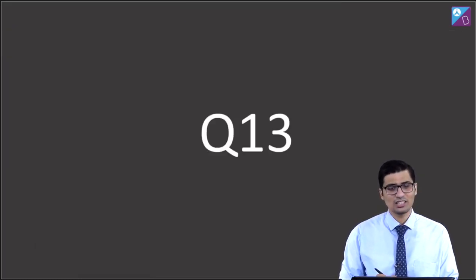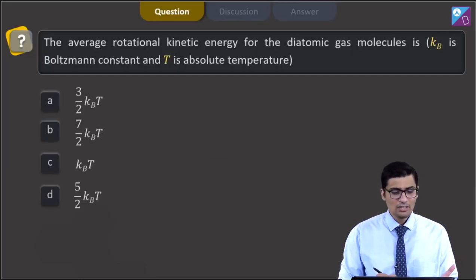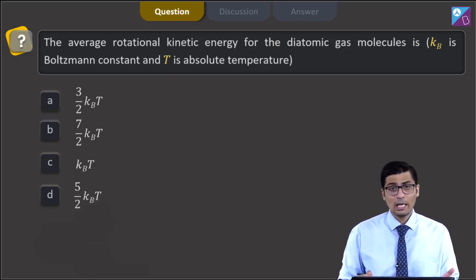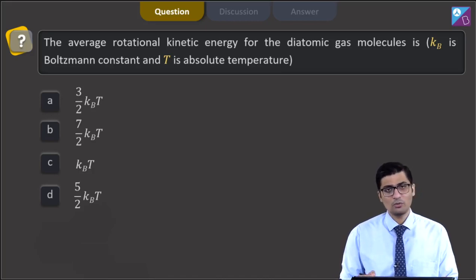This is question 13. The question says the average rotational kinetic energy for a diatomic gas molecule is (KB is the Boltzmann constant, T is the absolute temperature). The four options are 3 by 2 KBT, 7 by 2 KBT, KBT, or the last option which is 5 by 2 KBT.